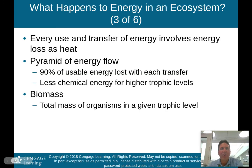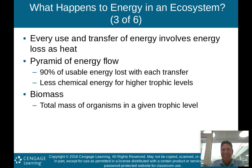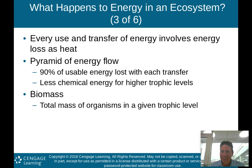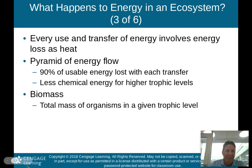Every use and transfer of energy involves energy loss as heat. This is very important. The pyramid of energy flow tells us that 90% of usable energy is lost with each transfer of a trophic level, which means there's less chemical energy for higher trophic levels. Biomass is the total mass of organisms in a given trophic level.